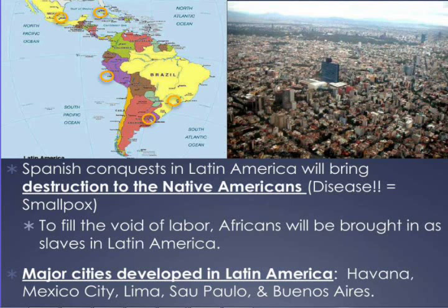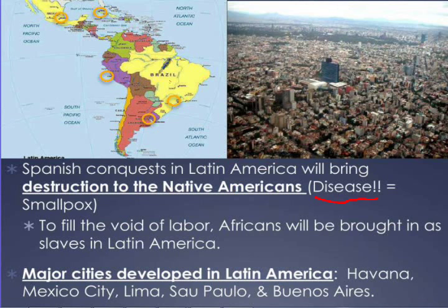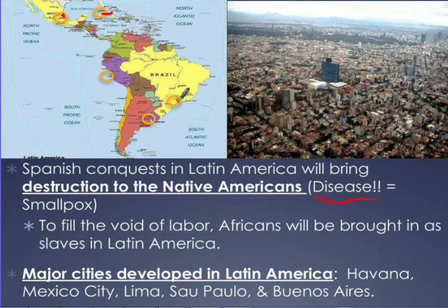This is kind of a review from stuff we've already done. The Spanish will take over Latin America and obviously bring with them disease — smallpox — leading to the destruction of Native Americans. To fill that void in labor, they're going to bring in Africans and use them as slaves. Major cities will develop as a result of this colonial economy: Havana in Cuba, Mexico City, Lima in Peru, Sao Paulo, and Buenos Aires.